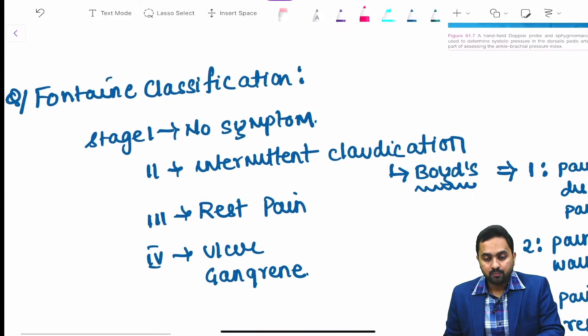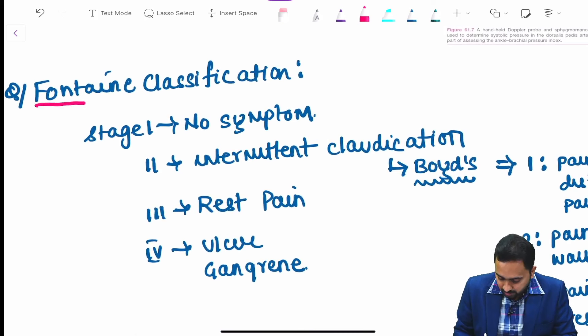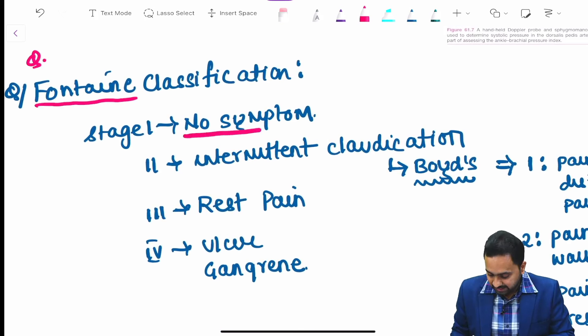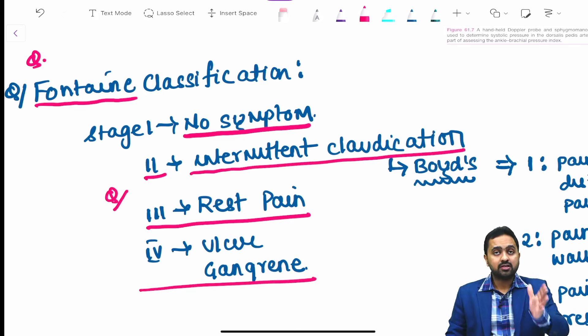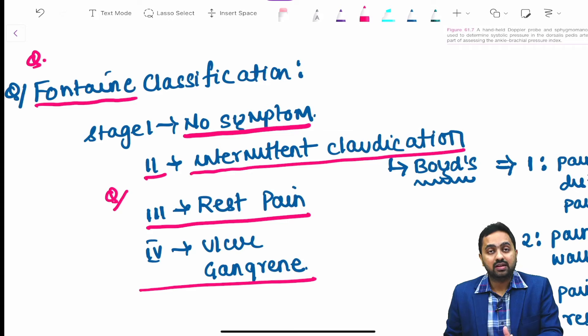An important classification is the Fontaine classification where stage 1 is no symptoms, stage 2 is intermittent claudication, stage 3 is rest pain, and stage 4 is ulcer or gangrene. Please remember rest pain in Fontaine classification is stage 3.